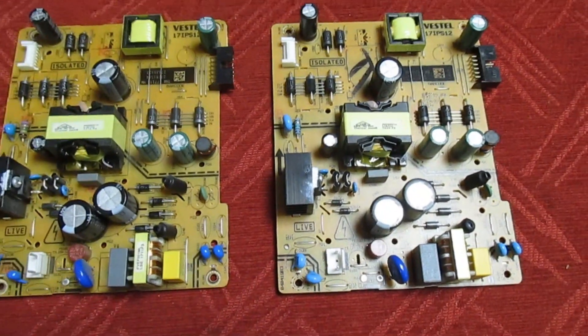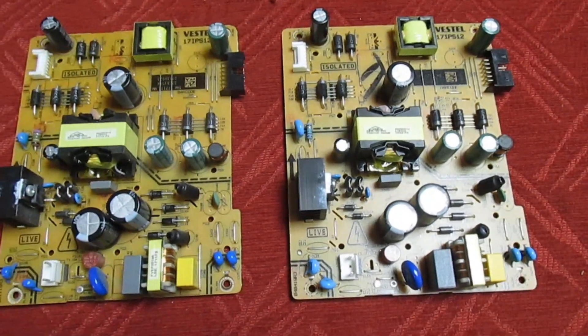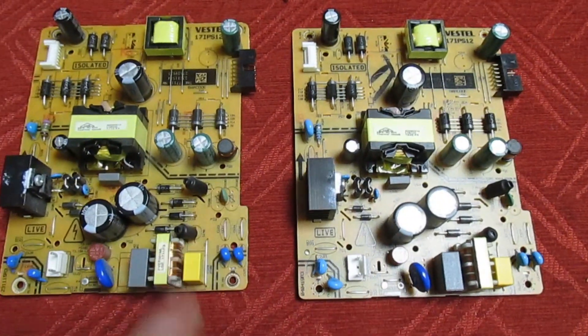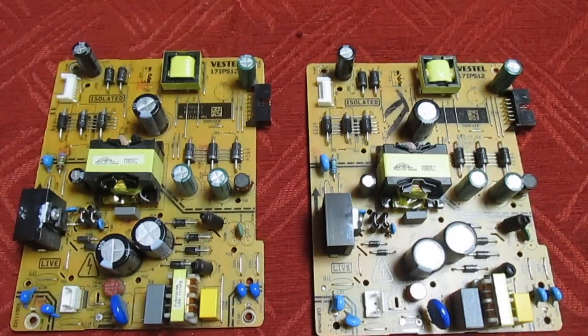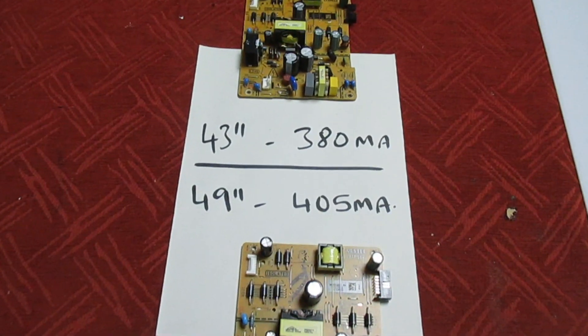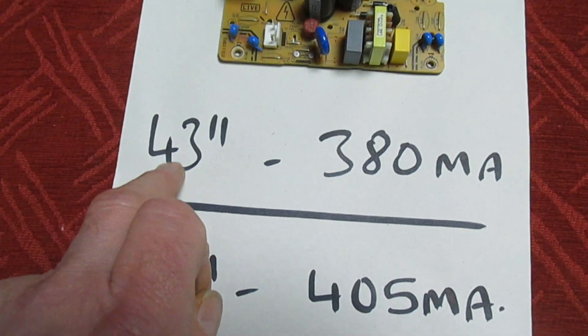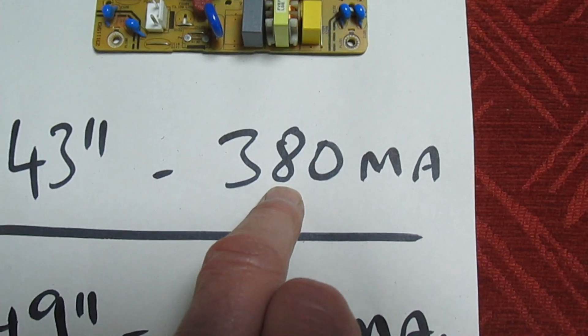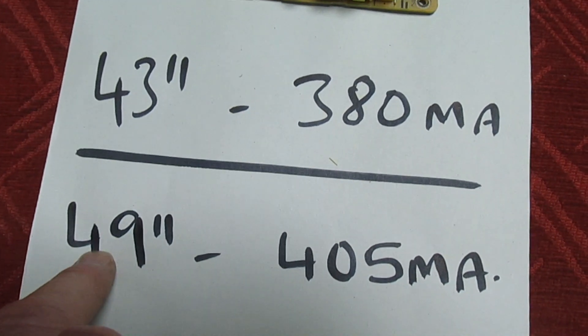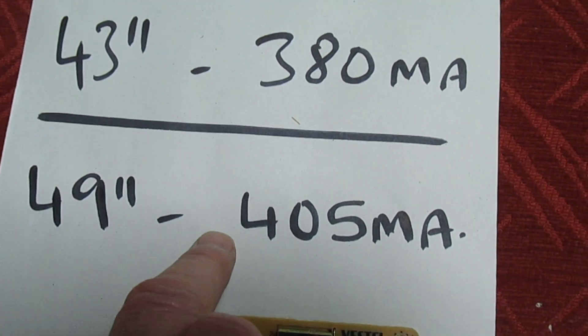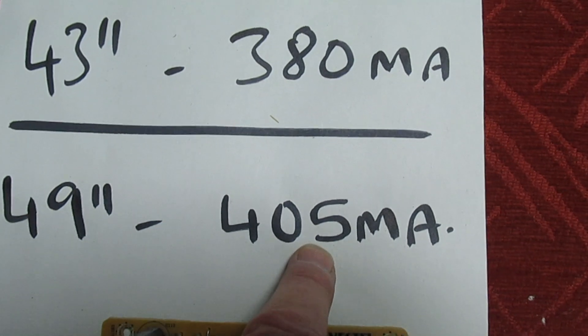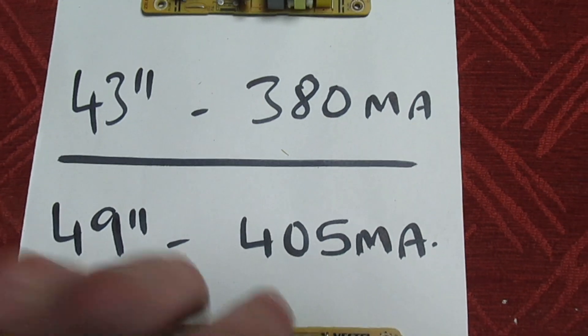So the output current of these two power supplies, although you could use either and they would be interchangeable, the output current from this is different to the output current from this one. Right, so now we can see the difference. The 43 inch one, the output current to the LEDs is 380 milliamp. On the 49 inch version, the output current to the LEDs is 405 milliamp.